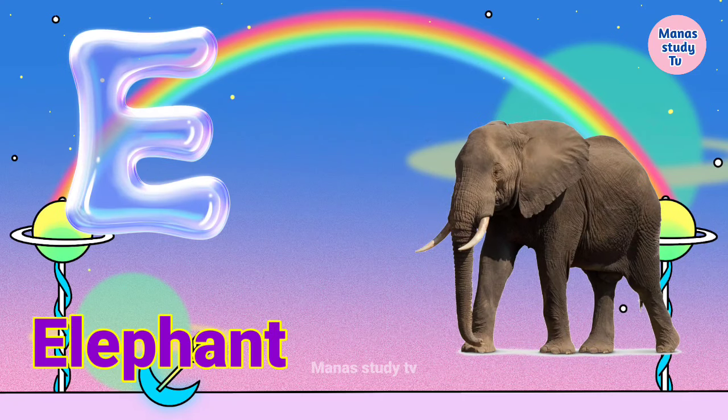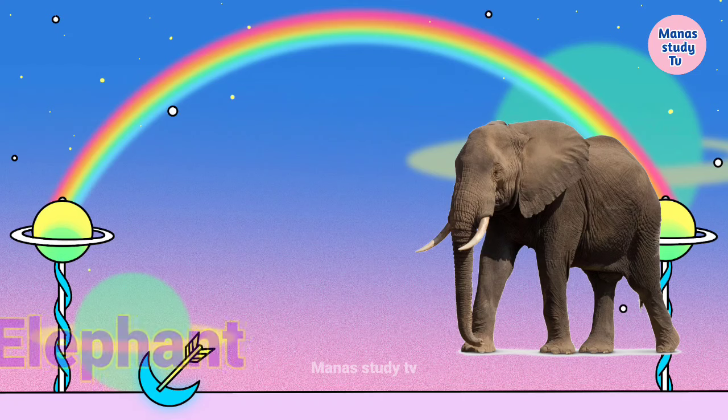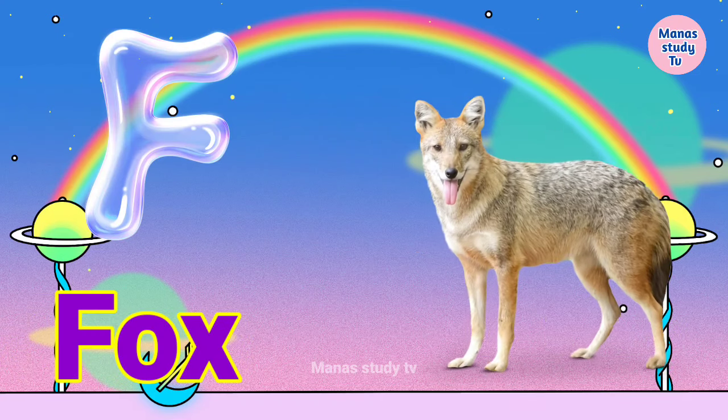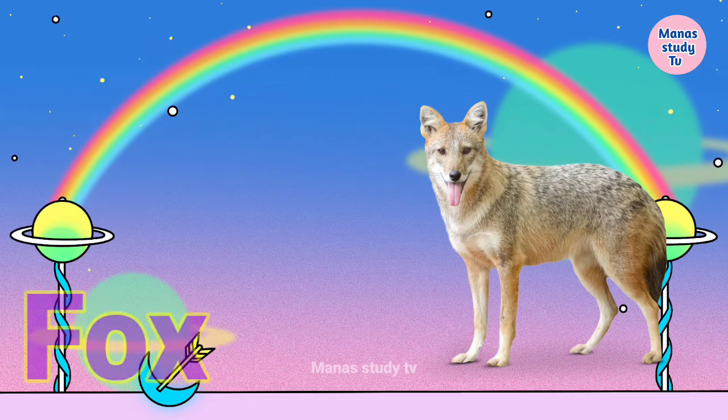E. E for elephant, elephant means hearty. F. F for fox, fox means loomani.